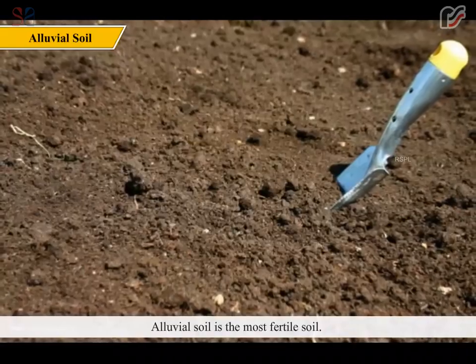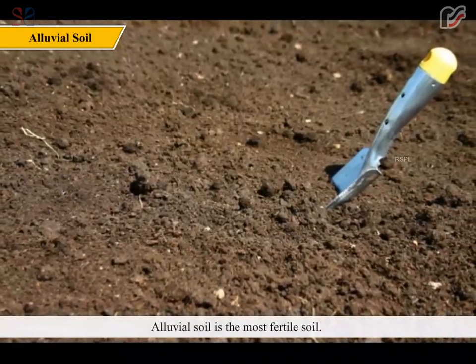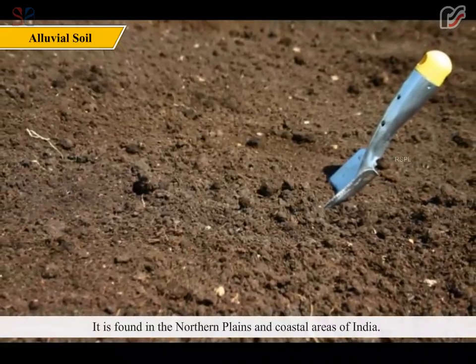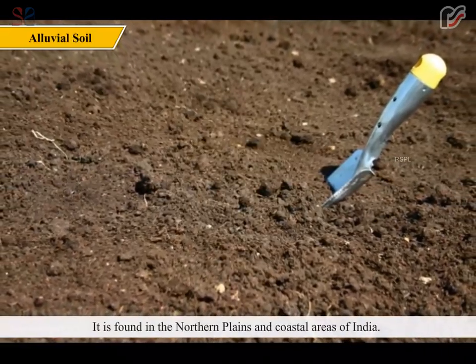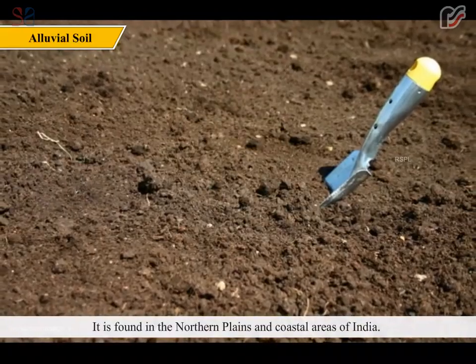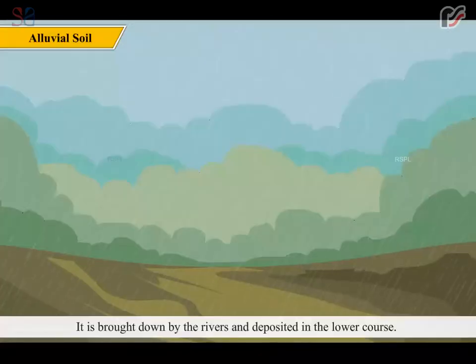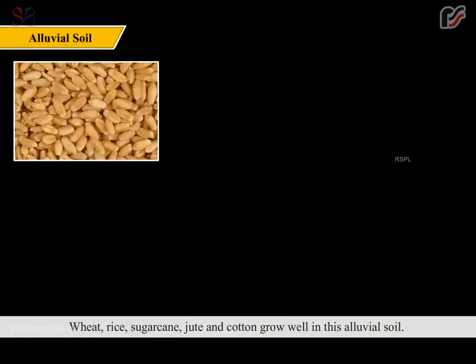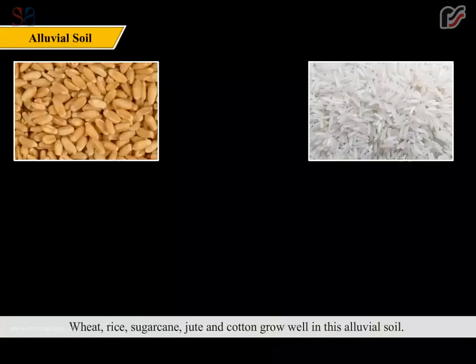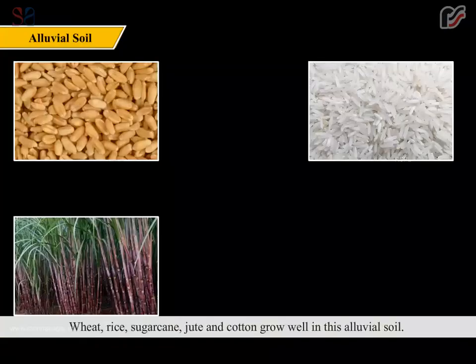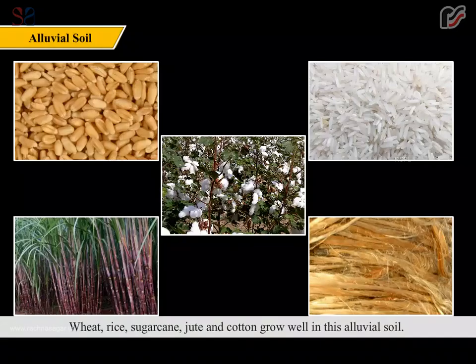Alluvial soil is the most fertile soil. It is found in the northern plains and coastal areas of India. It is brought down by the rivers and deposited in the lower areas. Wheat, rice, sugarcane, jute and cotton grow well in this alluvial soil.